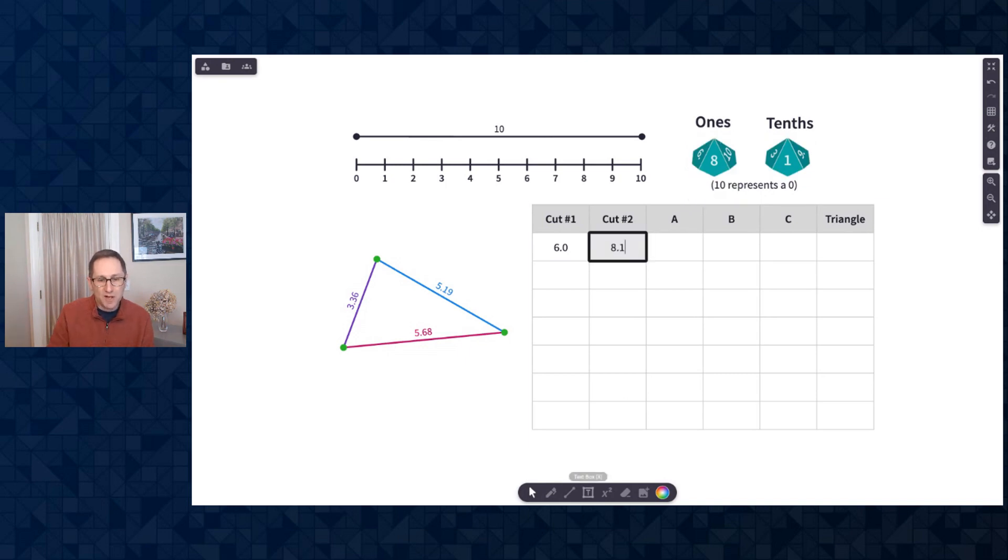And then just to model that, I'll go to the line tool. I'm going to draw a line with the ruler, so it's a straight line, and one cut is right at 6. One is at 8.1, and then those are the two cuts. So I have these three lengths of the triangle. One length is from 6 to 0. I'll add that to the table. So this is 6.0. The second length is this middle length in here between 8.1 and 6. So that's 2.1. And the third length is from 10 to 8.1. So that is 1.9.